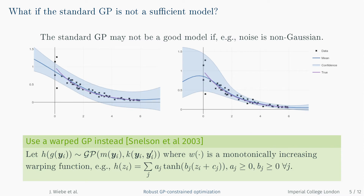In many practical applications, however, the standard Gaussian process model may not be adequate — for example, because the noise in the black box function samples is non-Gaussian. In this case, a warped Gaussian process may be an alternative, more flexible model. A warped Gaussian process uses a warping function h to map the observations into a latent space, where a standard Gaussian process is fit to the data. The parameters of the warping function are optimized simultaneously with the standard Gaussian process. These two graphs illustrate the power of warped Gaussian processes: the standard Gaussian process cannot model the non-uniform noise in the data well, while the warped Gaussian process captures this characteristic very well.